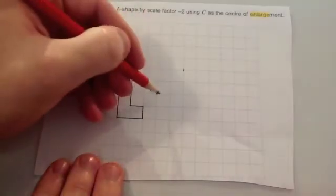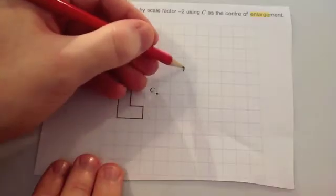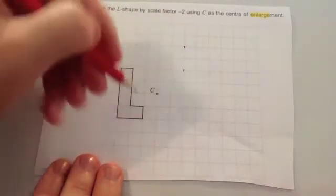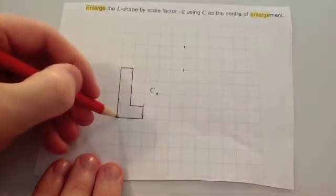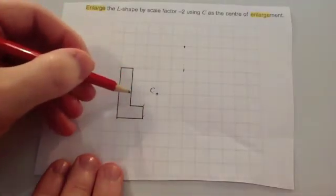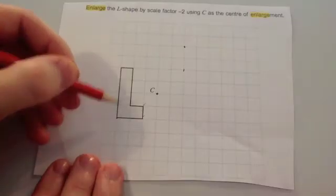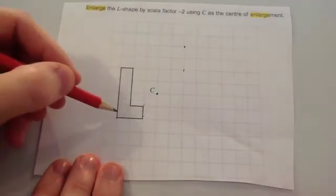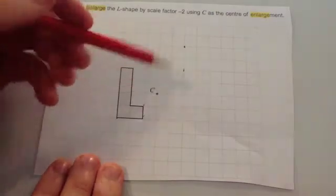So we go 2 to the right and 4 up to plot that second point. Now let's do this next point: it is 3 to the left and 2 down. So instead of 3 to the left and 2 down, we're going to double it and go the opposite direction — 6 to the right and 4 up.